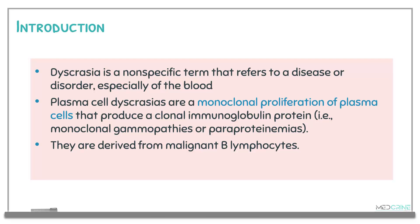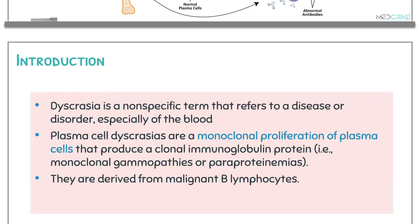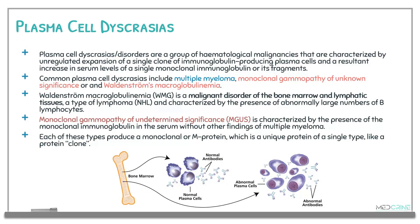These plasma cell dyscrasias are derived from malignant B lymphocytes, which are a type of white blood cells. A plasma cell dyscrasia is a group of hematological malignancies characterized by unregulated expansion of a single clone of immunoglobulin-producing plasma cells and a resultant increase in serum levels of a single monoclonal immunoglobulin or its fragments.